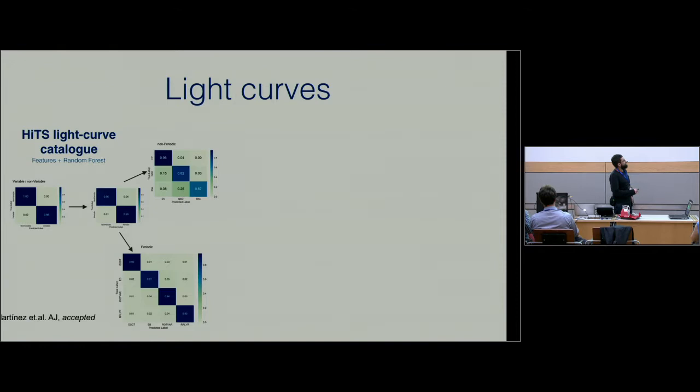In terms of light curves, we have this paper that has been recently accepted. It's basically a catalog of light curves from HiTS. This is work by Jorge Martinez. He did hierarchical classification - he classified into variable and non-variables, then into periodic or non-periodic, and so on. We have a catalog of light curves from HiTS.